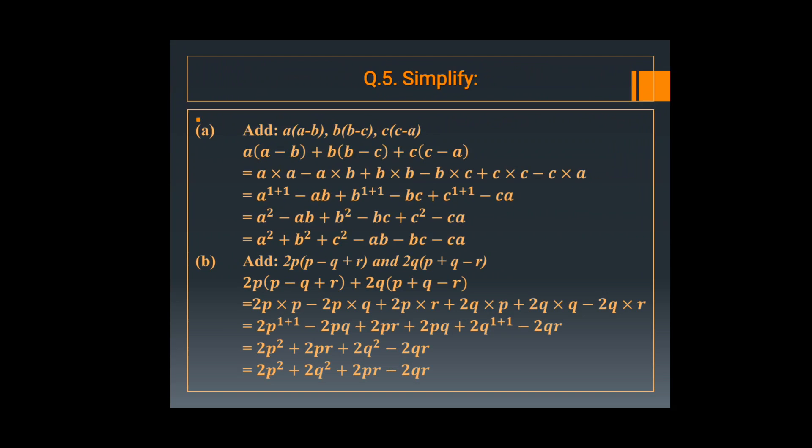Now in part b: add 2p multiplied by p minus q plus r, and add 2q multiplied by p plus q minus r. Multiply 2p by p, then by q, then by r. In the second bracket, multiply 2q through. You get plus 2p square, and terms including minus 2pq plus 2pq which cancel out (minus 2 plus 2 equals 0). So the remaining answer is 2p square plus 2q square plus 2pr minus 2qr.